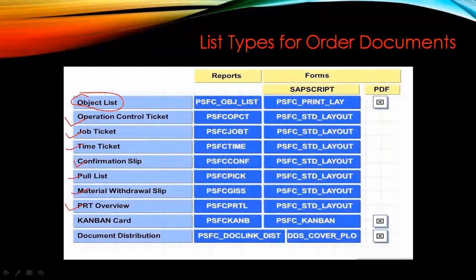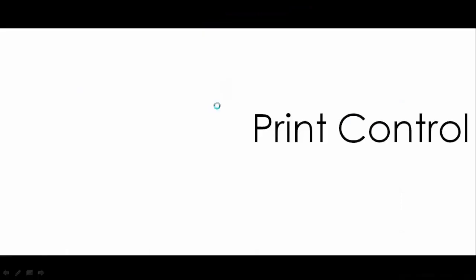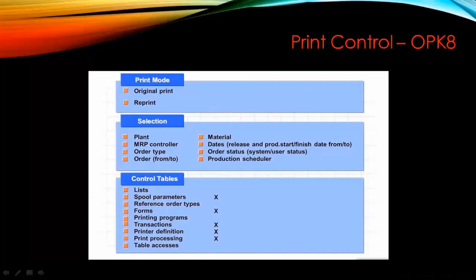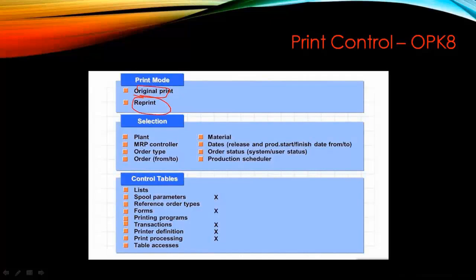These documents use either ABAP reports or forms such as PDF forms. I will show you where they are customized and assigned in the customizing for printing documents. Regarding print control, from the customizing point of view I will show you how to customize it. Whenever you print something, you can either print it as an original print or as a reprint — I will show you the difference between those two.